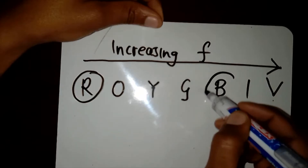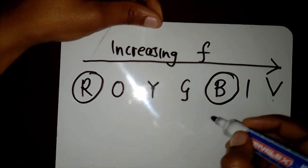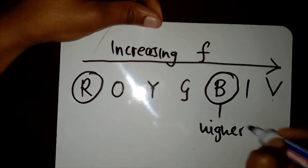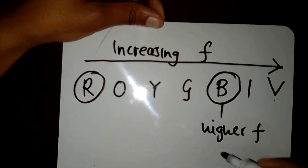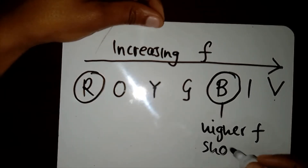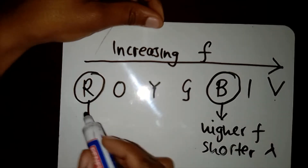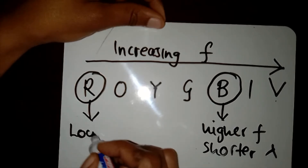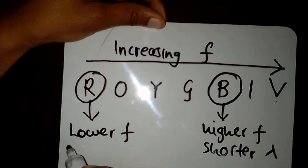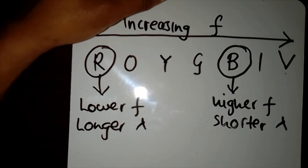So what does that mean? If we compare red light to blue light, the blue light would actually have a higher frequency. But if the frequency is higher, the wavelength is shorter, so blue light has a shorter wavelength. For red light, we would actually have a lower frequency, which corresponds to a longer wavelength.